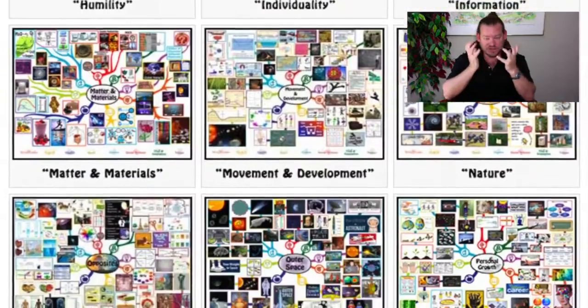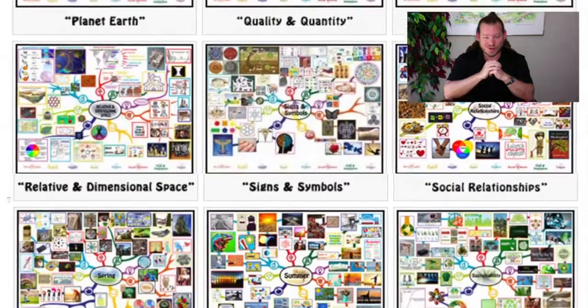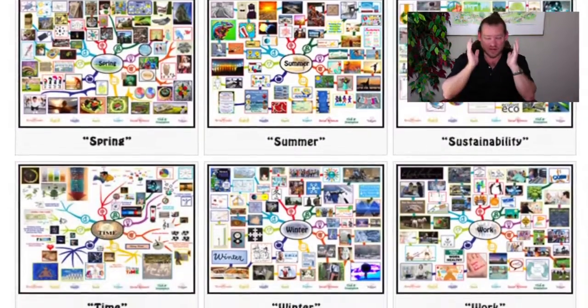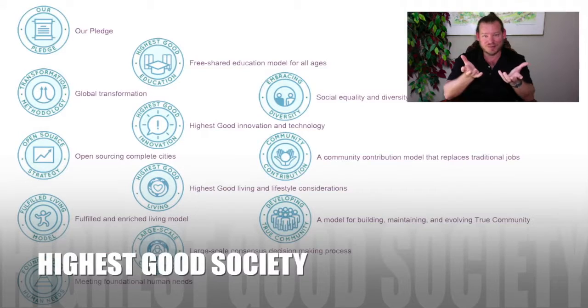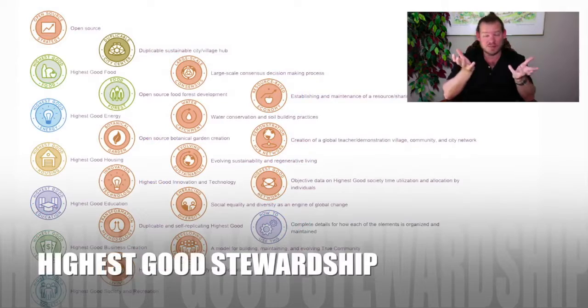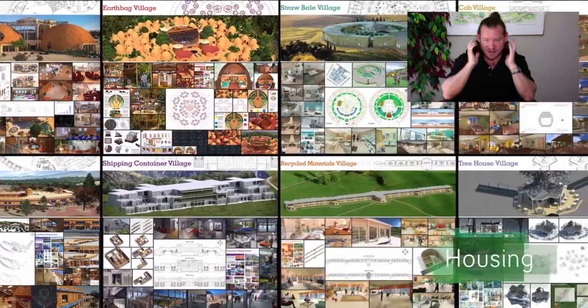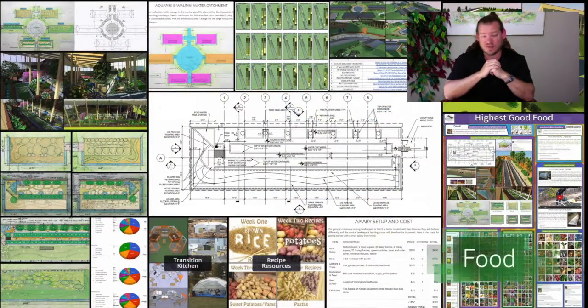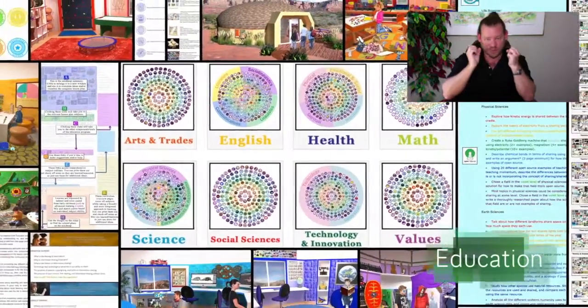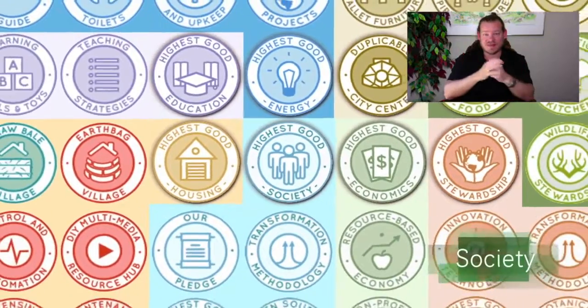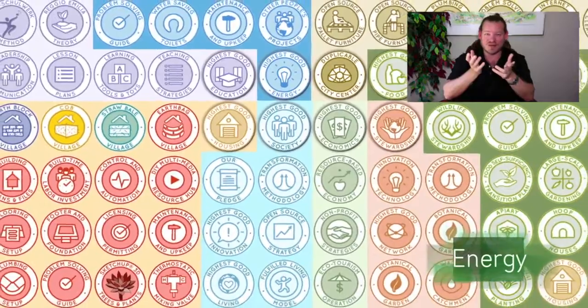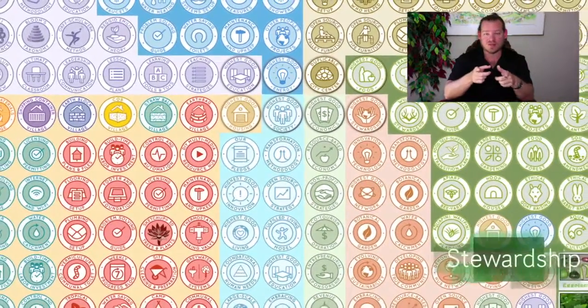We can address all the biggest challenges of our generation with a flexible, open source, and free-shared model like this. Everyone is invited to participate. We're a 100% volunteer, unpaid, non-profit, non-governmental organization creating this because we want to live this way and want others to be able to as well. For those that see a path to a world that works for everybody, we're here to support and invite you to participate. With all that said, here's one week of our team's progress and accomplishments working towards sustainable community models — open source, free share, and available to everybody.